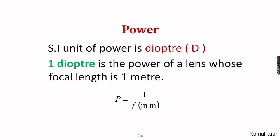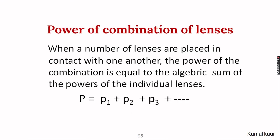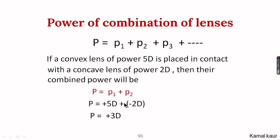Power is measured in the standard international unit called the diopter. If two or more lenses are placed in contact with one another, their combined power can be calculated as the sum of the powers of the individual lenses: P = P1 + P2. For example, a convex lens of power +5 D placed in contact with a concave lens of power −2 D gives a combined power of +3 D, which means the combination behaves as a convex lens and will converge parallel rays.